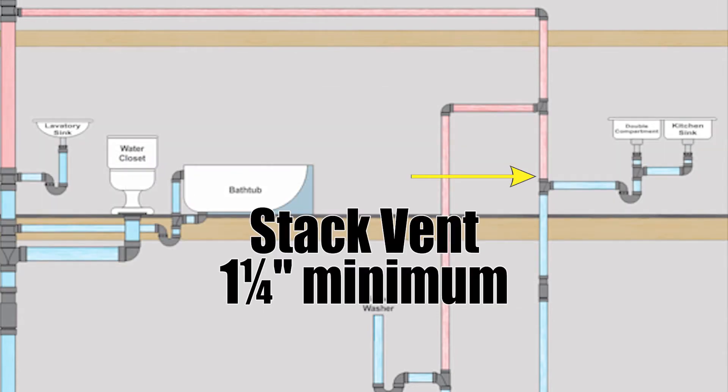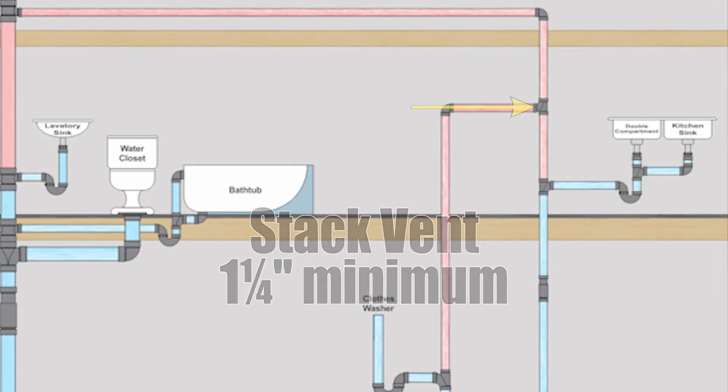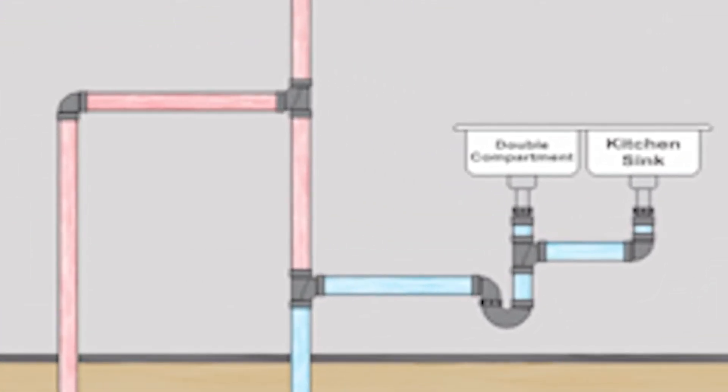Now we'll see that the stack vent goes up and it intersects with the individual vent right there with the TY. There's a couple things we need to talk about right there. The first thing I want to point out is the orientation of the TY. Notice how it looks like it's upside down. Well that's how we put it in for venting because the general flow of air is going up through the terminal which is the part that pierces the roof.